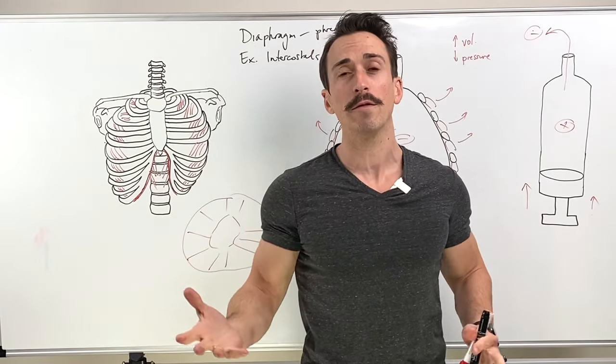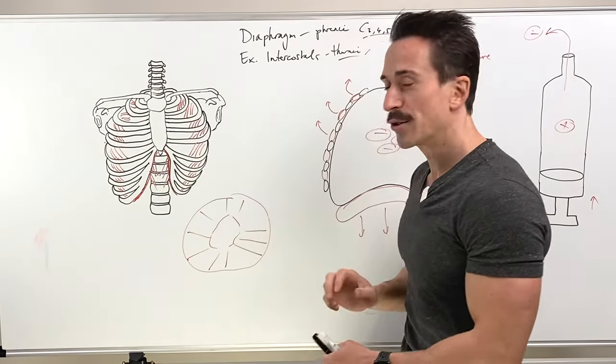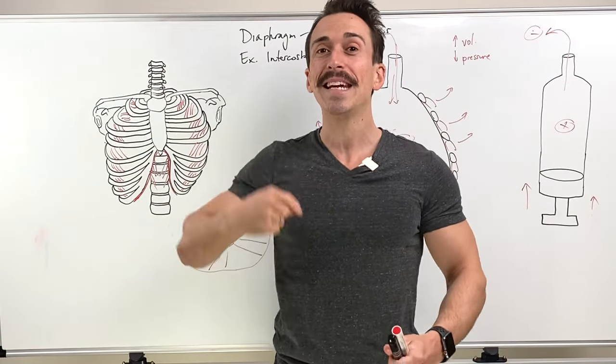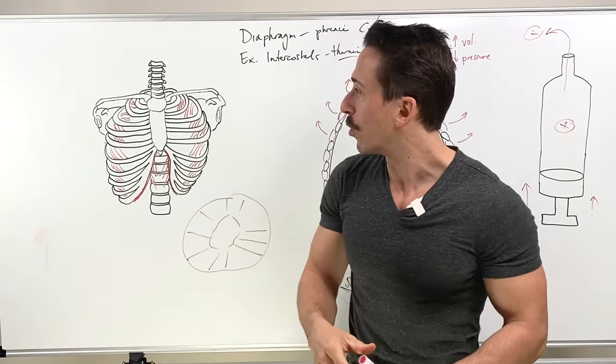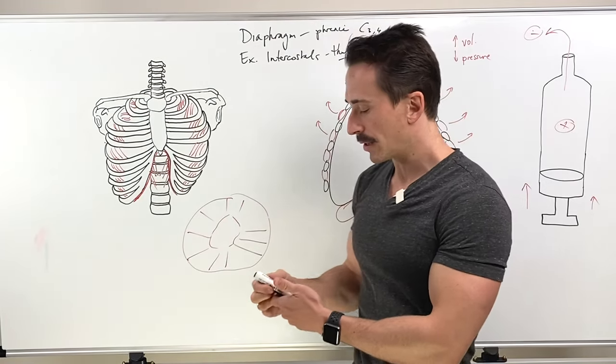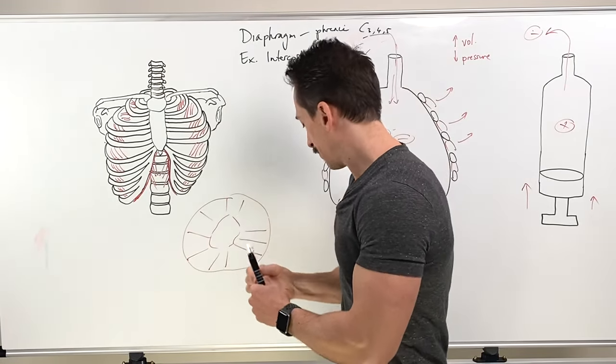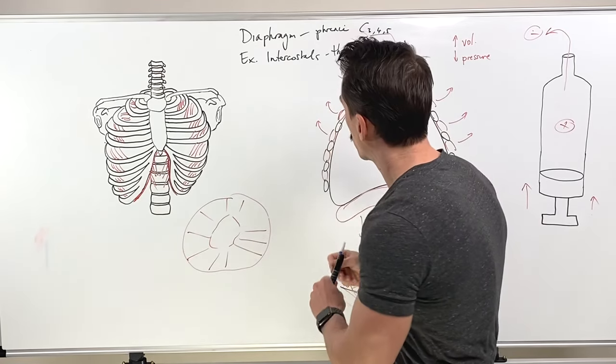But let's just say we want to go for a run. For example, we want to bring more air in than 500 mils. We need to bring liters of air in. We need to recruit what we call the accessory muscles. So let's go through those accessory muscles. First of which is going to be the sternocleidomastoid.